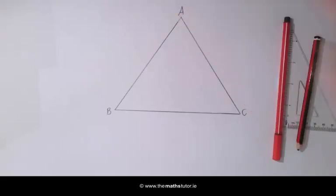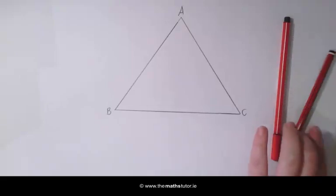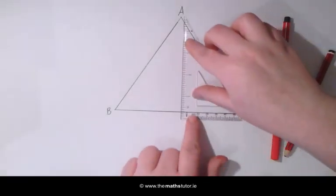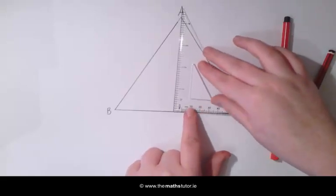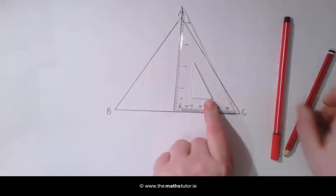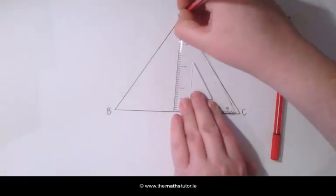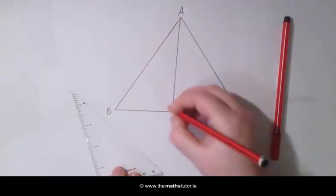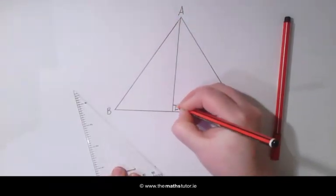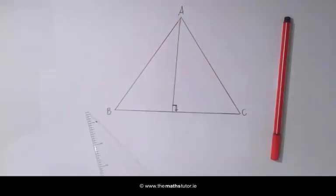So to draw an altitude at A we are going to use our set square so we can draw a right angle with the opposite side. Lining it up so that it is making a right angle and draw a line through this. Here we have a right angle from A to the opposite side.